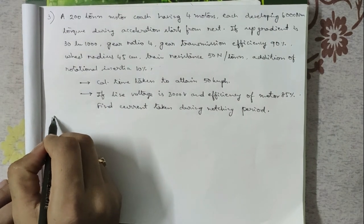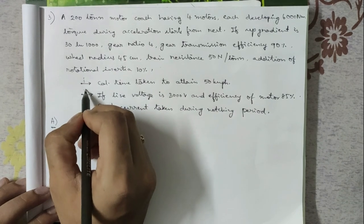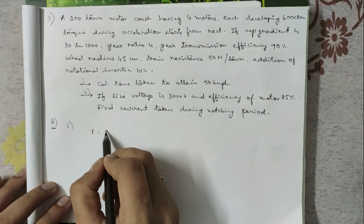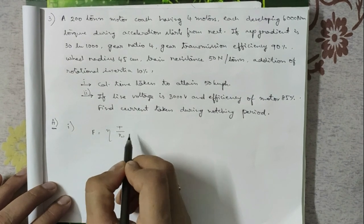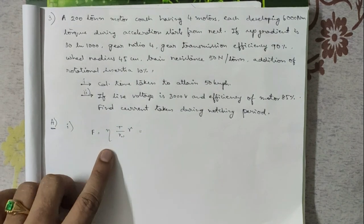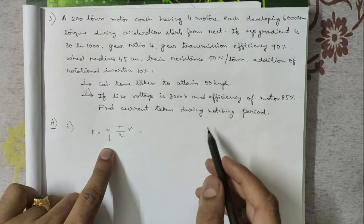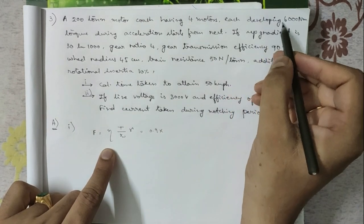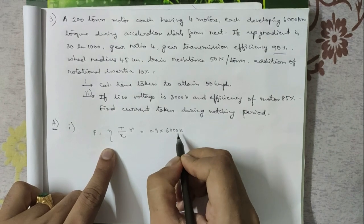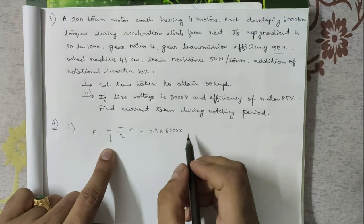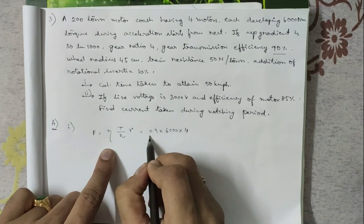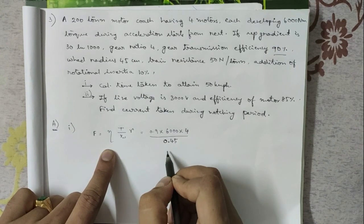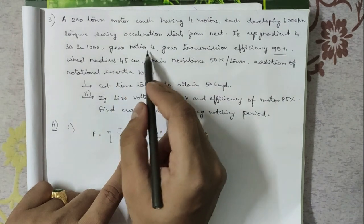For Part 1, the tractive effort F = η·T·γ / Rw = 0.9 × 6000 Nm × 4 motors / (0.45 m × 4). Here η is the gear transmission efficiency of 90%, torque is 6000 Nm per motor with 4 motors, the wheel radius Rw is 0.45 m, and γ (gear ratio) is 4.